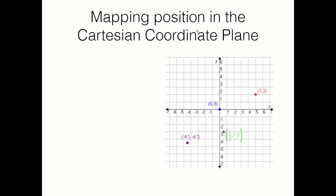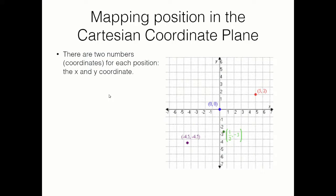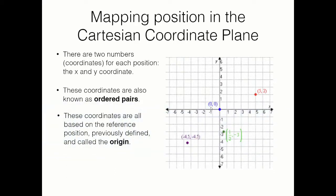Let's talk about how position is mapped in this plane. As you're familiar with from algebra, we have two coordinates for each position — the x and the y coordinate. We need both to specify a specific location in two dimensions. These are also known as ordered pairs.